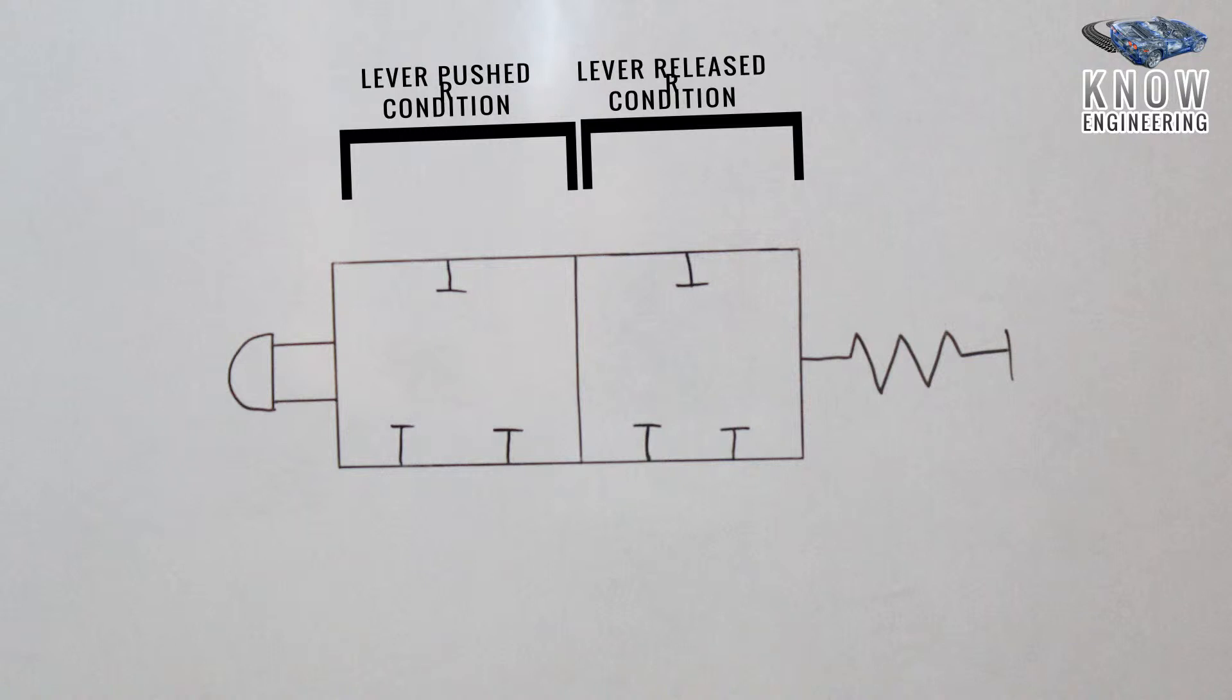In high pressure gas filling stations and all that stuff. So how does this operate? When the lever is pushed, port 1 is connected to port 3, and when you release the lever, it changes its direction from port 3 to port 1.